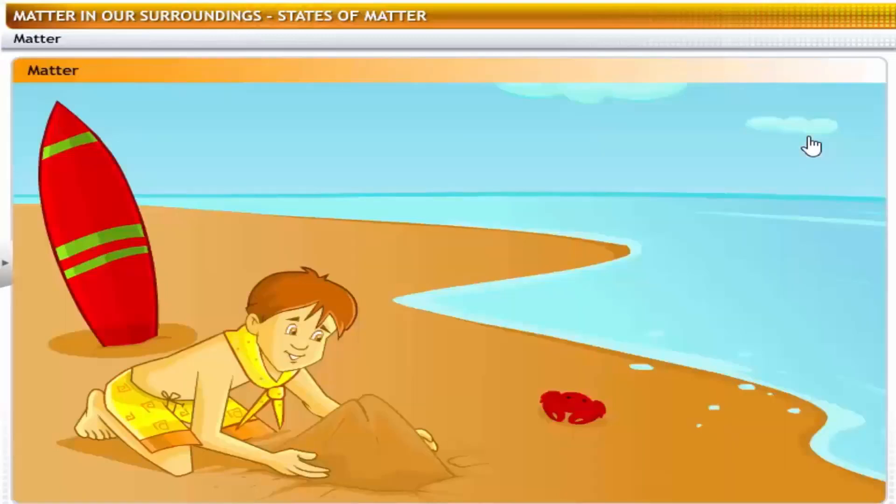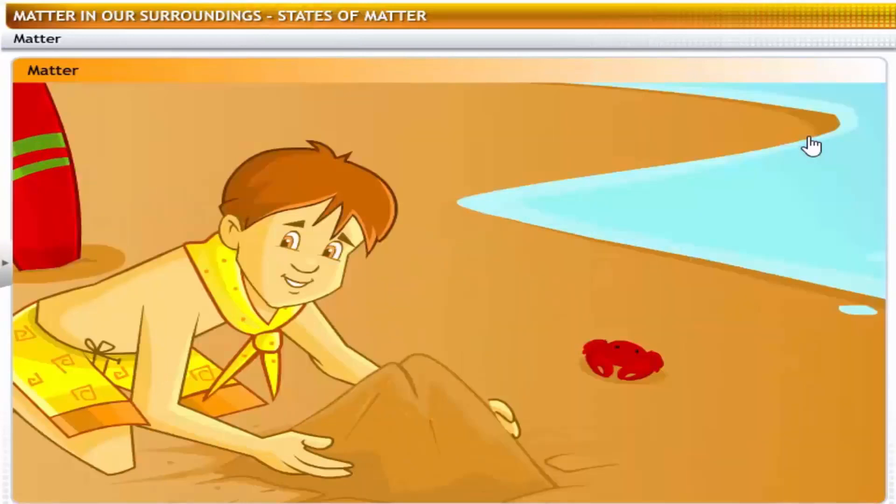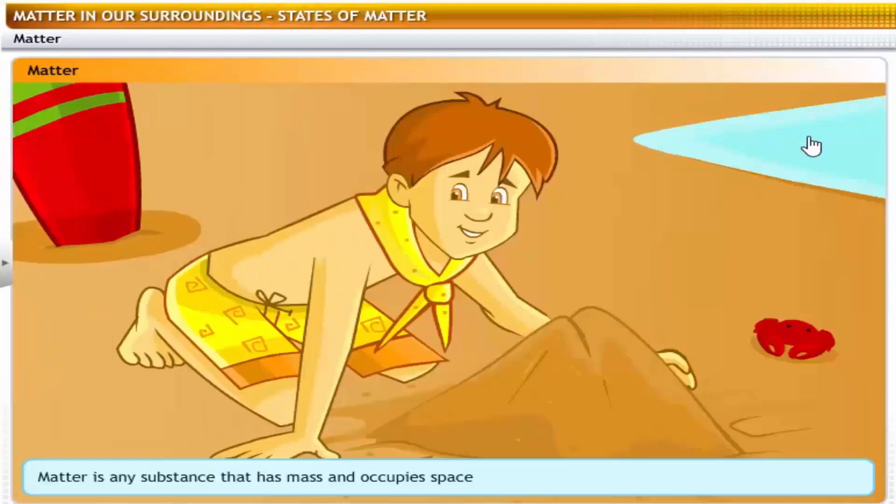Why does matter exist in the form of solids, liquids, and gases? What is matter? Matter is any substance that has mass and occupies space. All physical objects are composed of matter.